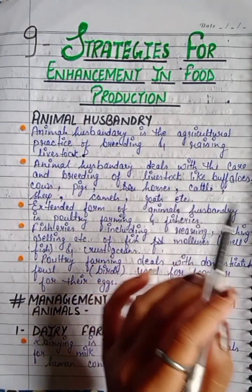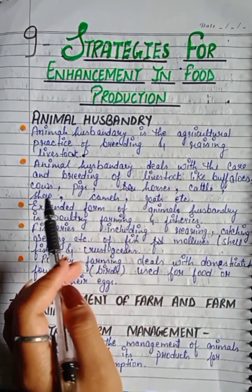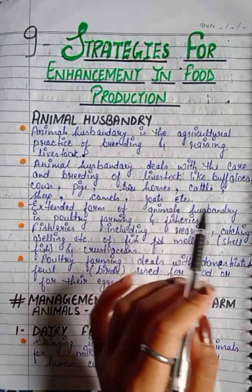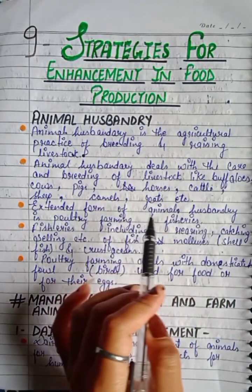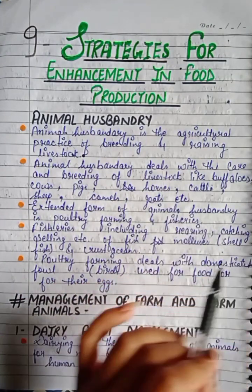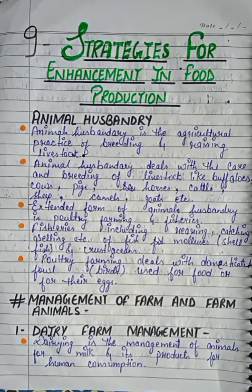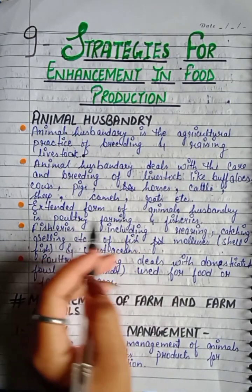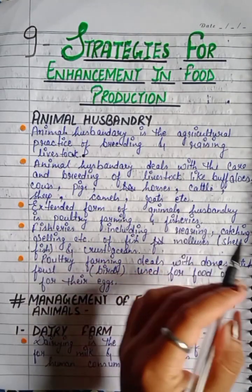Animal husbandry deals with the care and breeding of livestock like buffalo, cows, pigs, horses, cattle, sheep, camels, goats, etc. In animal husbandry we take care of livestock and breed them.